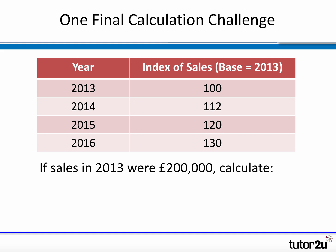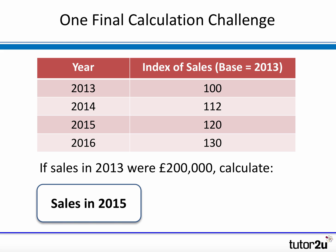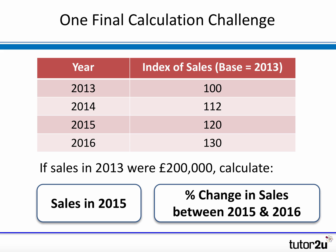Lastly, one more calculation to check your understanding. Here's a table showing four years of data. Sales in 2013 were £200,000 and the base in 2013 was 100. We're given index number information for the following three years. Can you calculate sales in 2015 using the base? And also, what is the percentage change in sales between 2015 and 2016? Pause the video, grab a calculator or pencil and paper, and have a go.